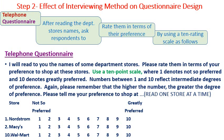Step number two: effect of interviewing method on questionnaire design. Telephone questionnaire. After reading the department store's name, ask the respondent to rate them in terms of their preference by using a rating scale as follows: 1 denotes 'not so preferred' and 10 denotes 'greatly preferred.' Therefore, the respondent will select their choice between 1 and 10.